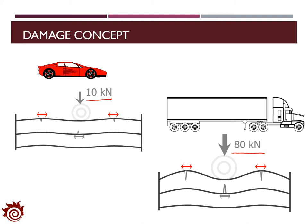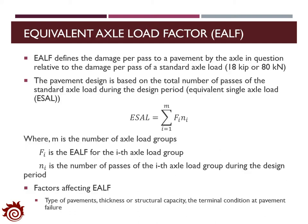This indicates that analysis of pavement performance with respect to traffic should be based on truck traffic instead of passenger cars. To identify the damage caused by traffic load, a new term — equivalent axle load factor, EALF — is defined. EALF defines the damage per pass to a pavement by the axle in question relative to the damage per pass of the standard axle load of 18 kilopounds or 80 kN.